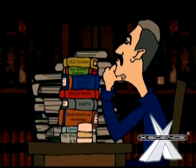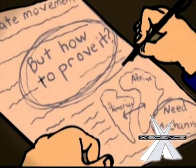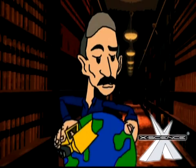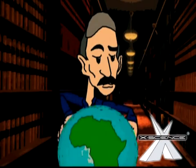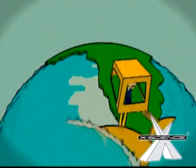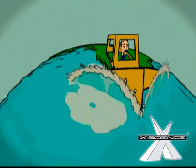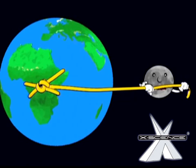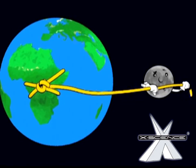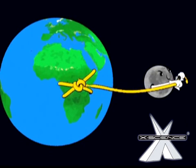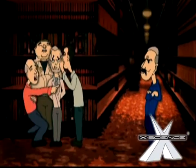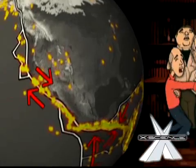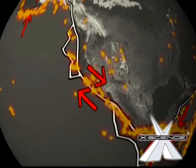The problem with Wegener's theory was that he didn't have a mechanism to prove that the continents actually had drifted. When pressed, he could only offer that perhaps the continents had plowed through the oceans and consequently destroyed the floor. He also raised the possibility of the moon's pull, hypothesizing that the force responsible for our tides is possibly powerful enough to move continents. Of course, both suggestions were met with great skepticism by his contemporaries.